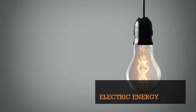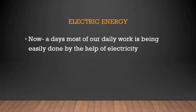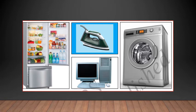Next is electrical energy. Nowadays, most of our daily work is easily done with the help of electricity. For example, washing clothes by hand is difficult, but using a washing machine makes it much easier. It is possible to do more work in less time using electricity. Write any four works done using electrical appliances at home — for example: washing machine for washing clothes, refrigerator for freezing food items, and iron box for ironing. Electricity is supplied to houses and other places from electric power generating stations, and electrical appliances must be used carefully.